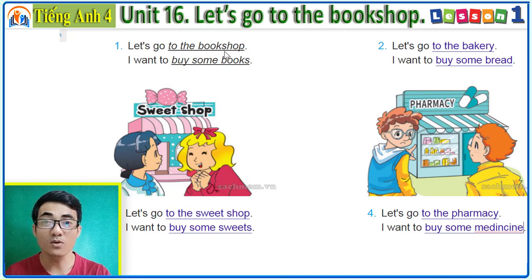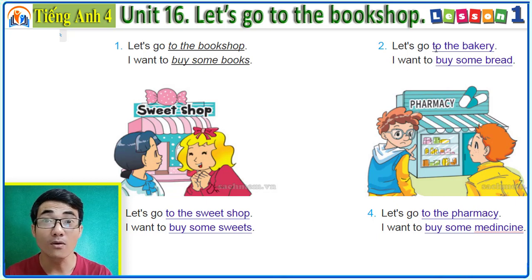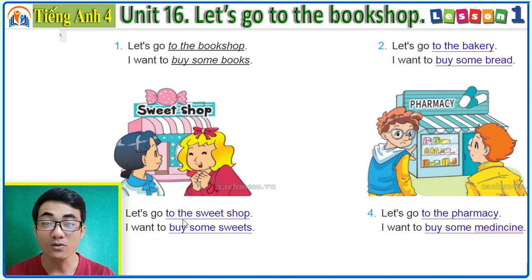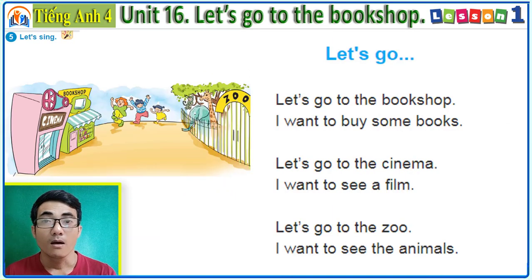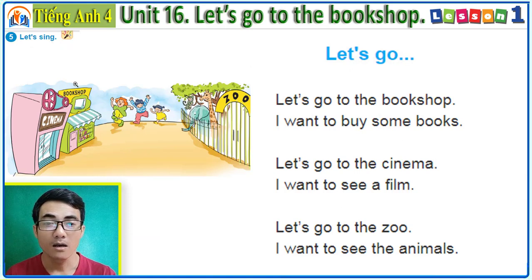Once again — 1: 'Let's go to the bookshop. I want to buy some books.' 2: 'Let's go to the bakery. I want to buy some bread.' 3: 'Let's go to the sweet shop. I want to buy some sweets.' 4: 'Let's go to the pharmacy. I want to buy some medicine.' Good!